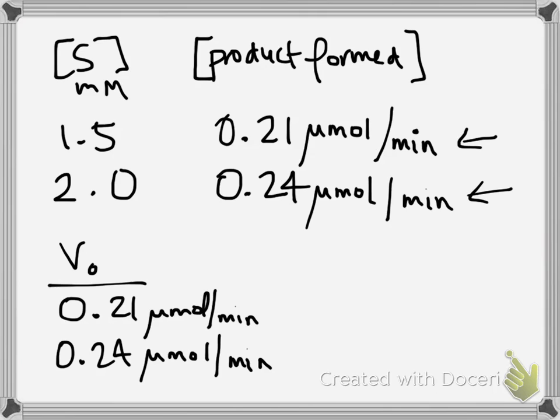So the difference between this problem and the one in class is that in class I didn't give you the velocity. I asked you to calculate that from the concentration of product over the time interval, but in this problem they do that for you.